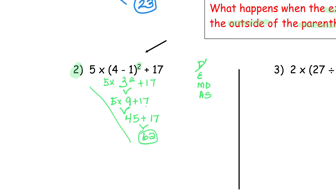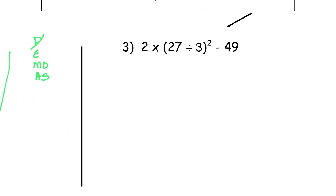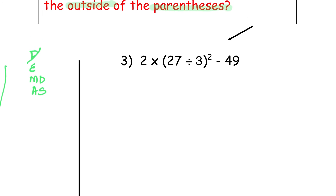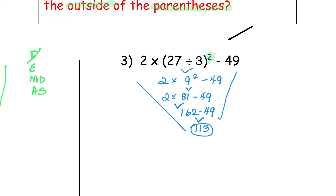Now you can try number three — it's a very similar type of problem. Try that one on your own. Remember that there is an exponent on the outside. Pause the video and give it a try. The answer to number three is 113.